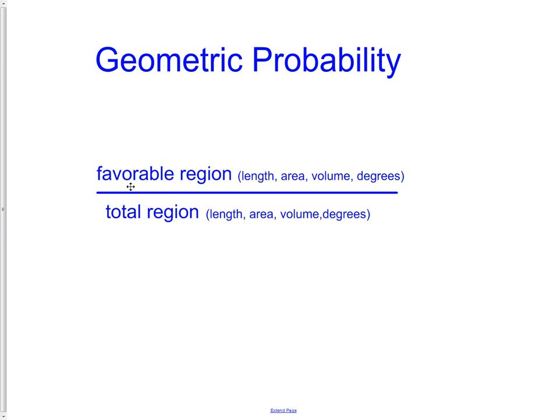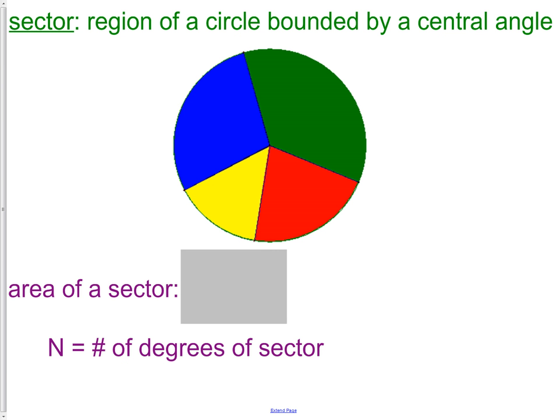If we think of dropping a penny onto a dartboard, there are 20 different regions that we want it to land on, but which region would we actually like for it to happen? So we would have 1 over 20, because we want it to land in 1 out of a total of 20 possible. Let's look at that as a part when we talk about geometry.